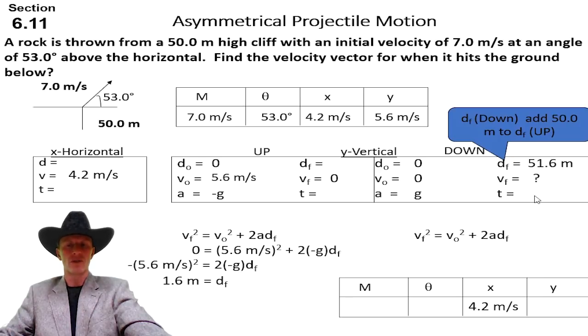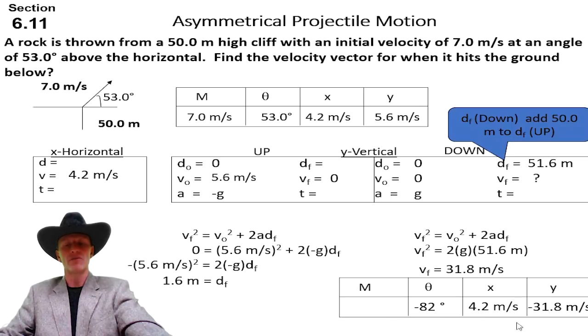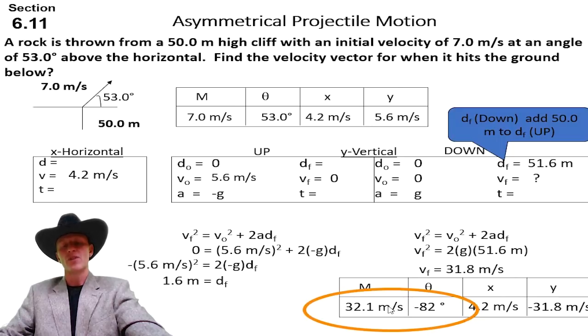Now we can use the third equation to get that velocity, which is in the negative direction. Notice you just square root this. It's 31.8. In this box, we let down be positive. But in this box, down is not positive. Down is negative. Remember, this is what the calculators are programmed to. When you arc tan y over the x, we get a negative 82 degrees, which is the direction that we want. We want a fourth quadrant angle. Now we have to square this, square this, and square root and get the magnitude. So 32.1 meters per second at an angle of negative 82 degrees is your answer.